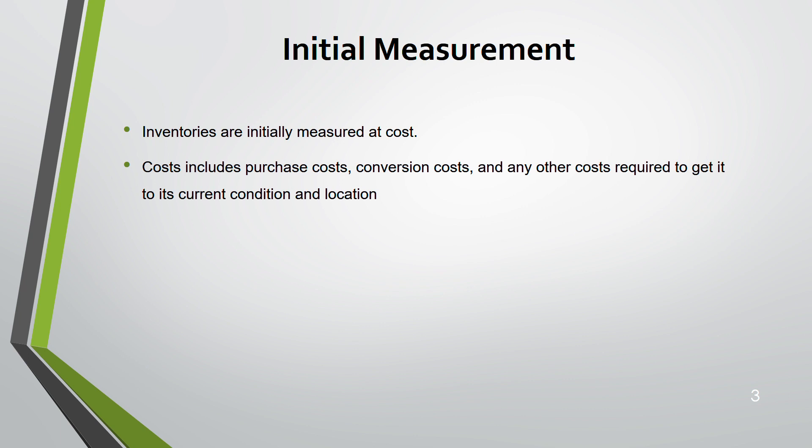Purchase cost is how much you paid to get that inventory, conversion cost, and any cost required to bring the inventory to its current condition and location. If there are any other costs other than these, they are taken as expenses — you cannot include them as inventory.